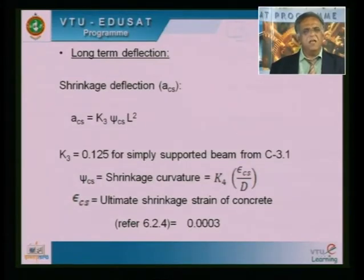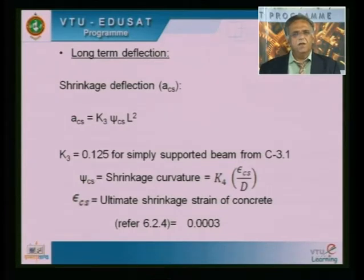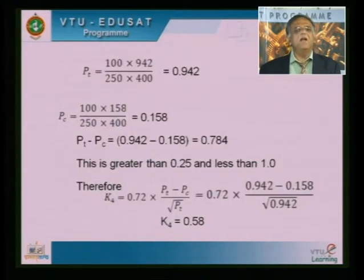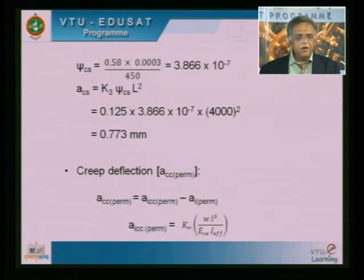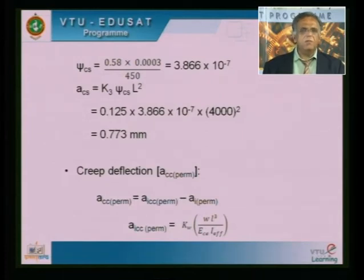These things I have already discussed, but once again I will glance over this long term deflection due to shrinkage. K3 is a value picked up from clause C3.1 of annexure C. The value for a simply supported beam is 0.125. ψ_cs is calculated and substituted. Once you substitute ψ_cs, K3, and L², you can get the long term deflection due to shrinkage.